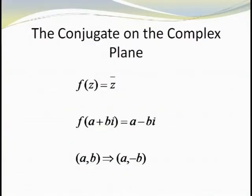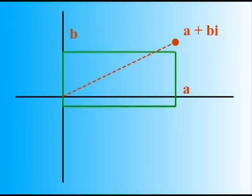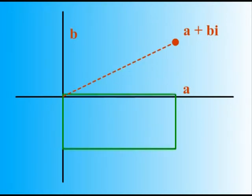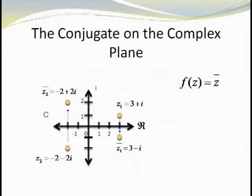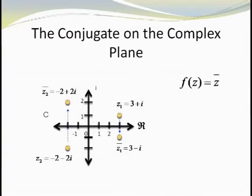One easy operation to visualize is the conjugate of a complex number. If z equals a plus bi, then the conjugate of z is a minus bi. The real number values are the same, but the imaginary coefficients take on an opposite sign. On the complex plane, this has the effect of reflecting the conjugate across the horizontal real axis. You can see two examples here with complex numbers 3 plus i and minus 2 minus 2i.